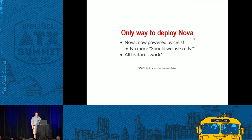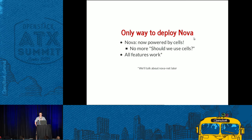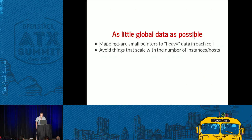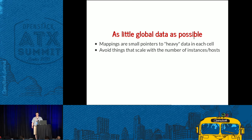There's only one way to deploy Nova now — it's basically Nova powered by cells. No more decisions about whether to use cells or not. We should probably stop even saying 'cells' at some point — it's just Nova. All features will work, which is a big deal for people using V1. The one caveat is NovaNet, which we'll discuss shortly. We want as little global data as possible — just small pointers to heavy data in each cell, avoiding anything that scales with the number of instances or hosts.